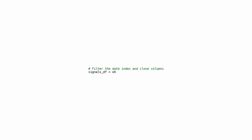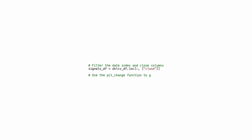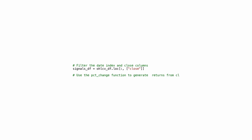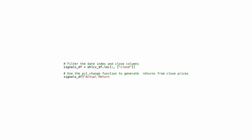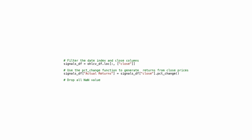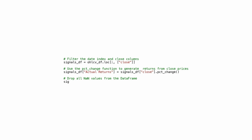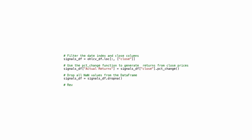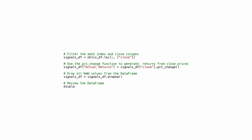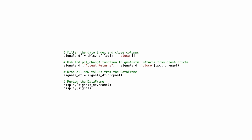This code filters the dataset by selecting only two columns — the date index and the close price — and storing them in a variable called signalsDF. The PCT change function is then used to calculate the percentage change in close prices over a period of time, and this is added as a new column called actual_returns in the signalsDF DataFrame. The code also drops all rows with missing values, as PCT change returns NaN for the first row. The head and tail functions display the first and last five rows of the filtered dataset.